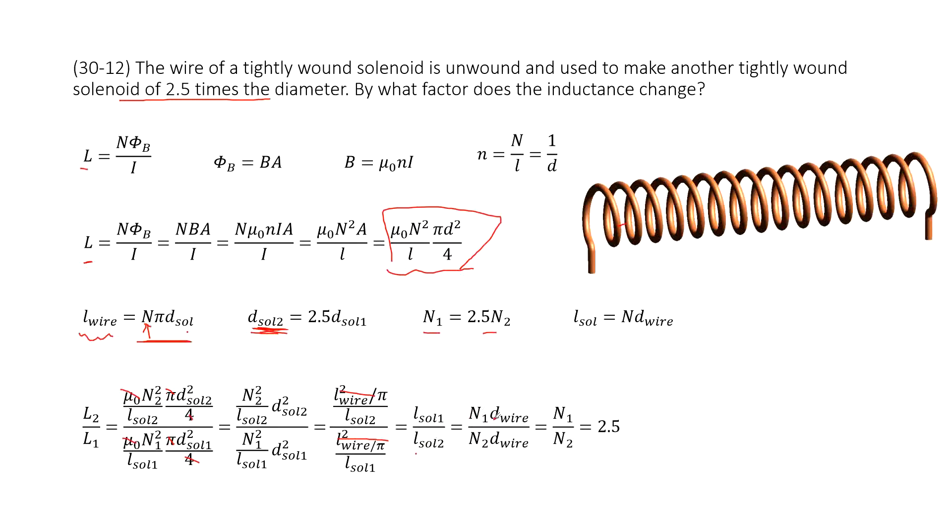So L solenoid 1, n₁ times d_wire, n₂ times d_wire for the second solenoid. d_wire cancels. So we get it as n₁ divided by n₂. So answer is 2.5. Thank you.